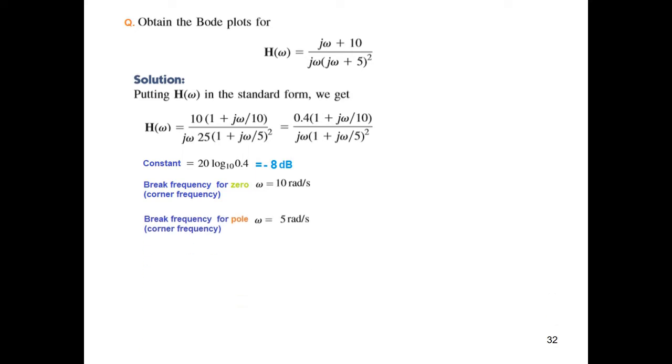And for the pole, one of the break frequency is at 5 radians, and there is another break frequency at zero actually, or 1. jω = 0 will start from 1.